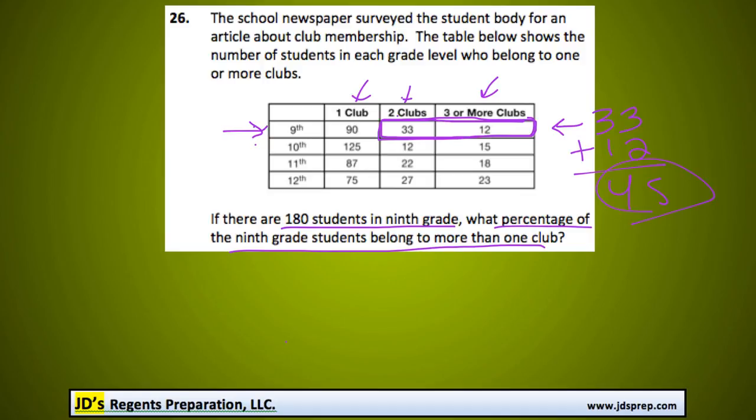Now, to figure that out as a percentage, we need to divide that by the total amount of students there are, which is 180. So 45 out of 180.